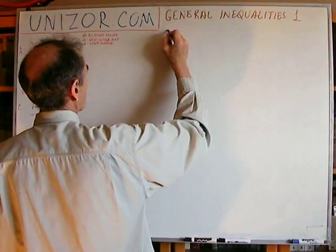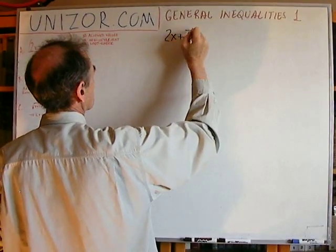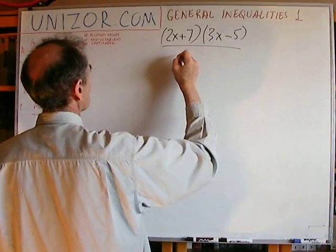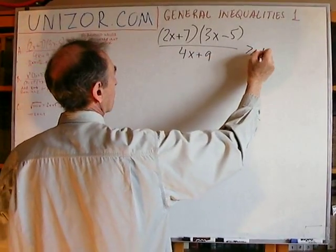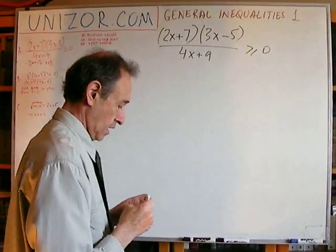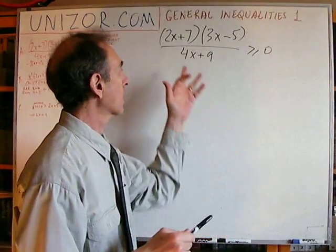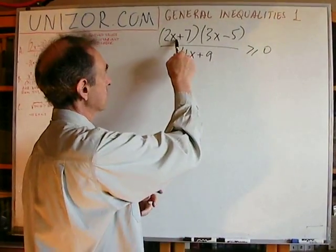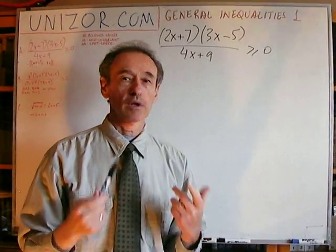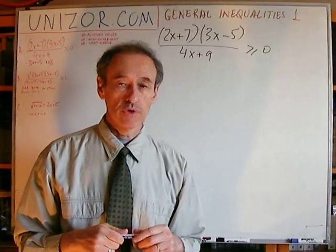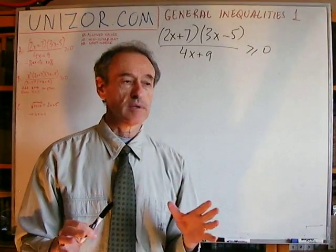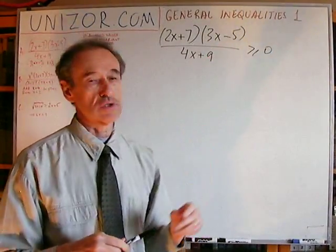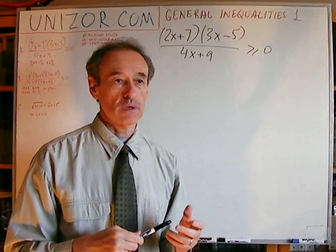Number one: we have (2x + 7)(3x − 5) divided by (4x + 9), greater than or equal to zero. So we are looking at the result of multiplication and division of simple linear expressions, and we are looking for the result of this to be non-negative. Let's think about this from the following perspective: when can a particular result of multiplication and division be non-negative?